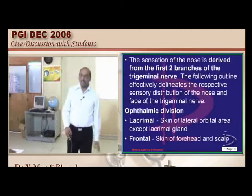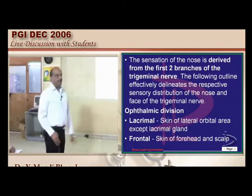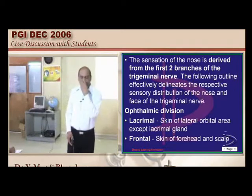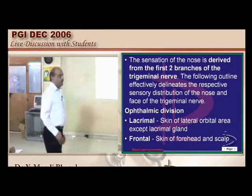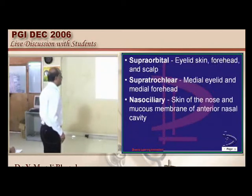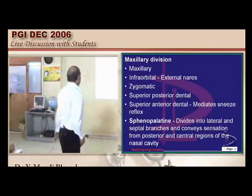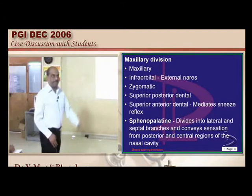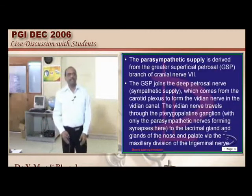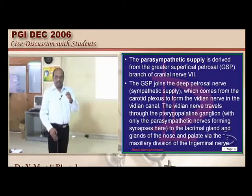The tip of the nose — the nerve supply of the nose is one of the favorite topics of the examiner. Basically it is the first two branches of the trigeminal — the ophthalmic division and the maxillary division — that are primarily responsible for innervating the nose. Branches of the ophthalmic division include lacrimal, frontal, supraorbital, supratrochlear, nasociliary, anterior ethmoidal, posterior ethmoidal, and infratrochlear. The sphenopalatine, a branch of the maxillary division, is also very important in innervating the nose. The parasympathetic nerve supply comes from the greater superficial petrosal branch of the facial nerve — cranial nerve 7.